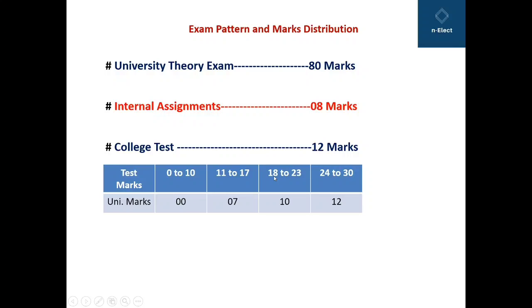If you score from 18 to 23 you will get 10 out of 12. You will get 12 out of 12 marks as per the university norm.